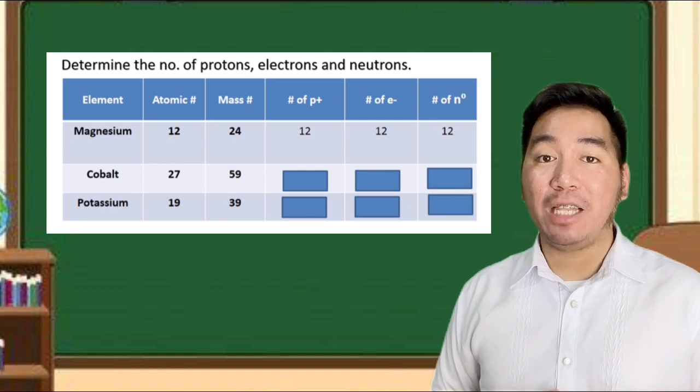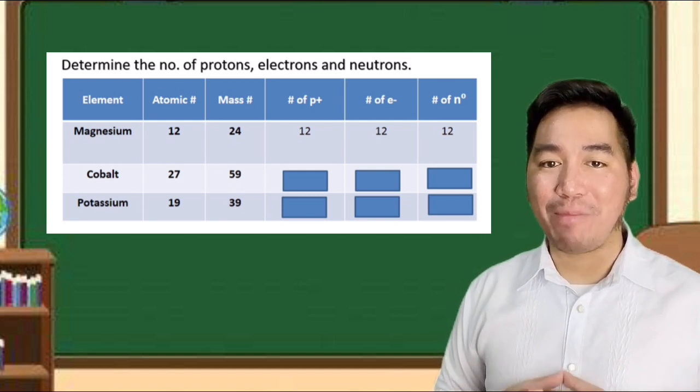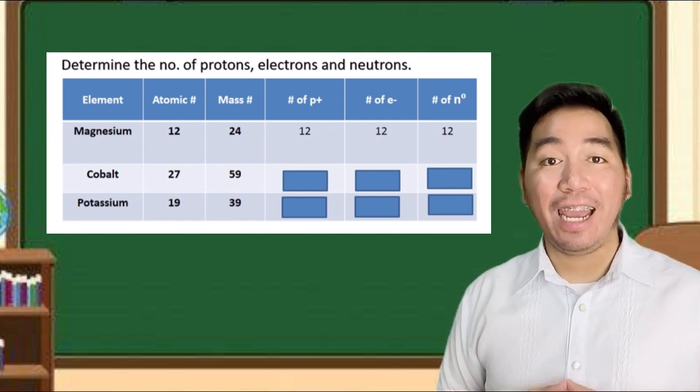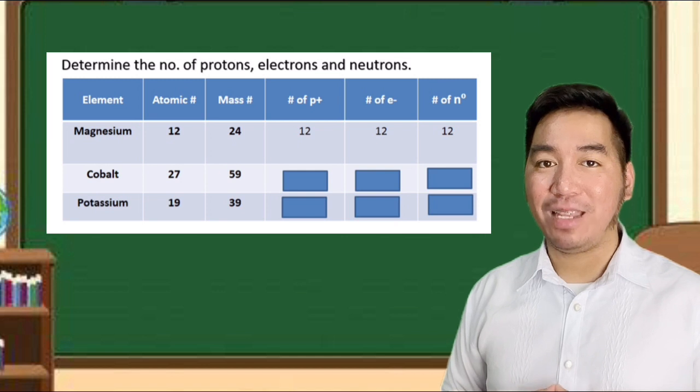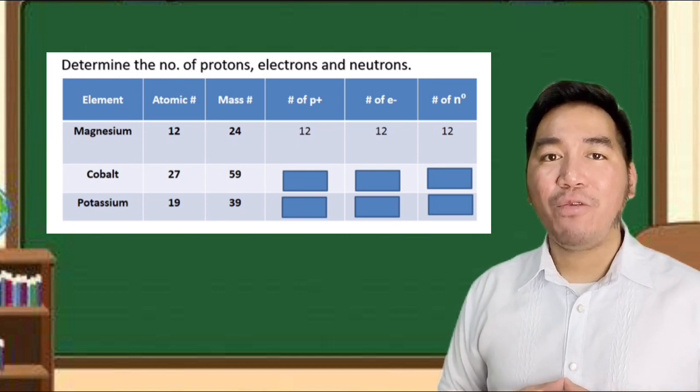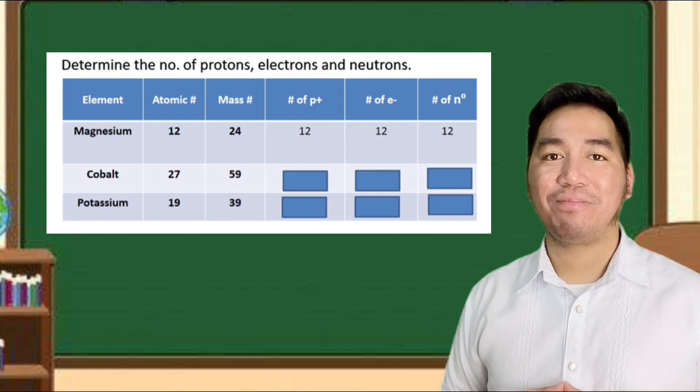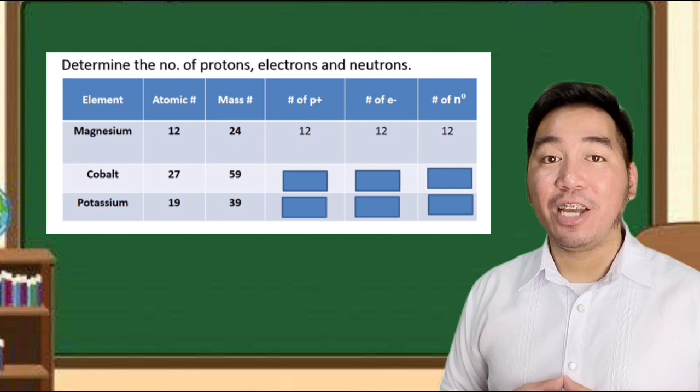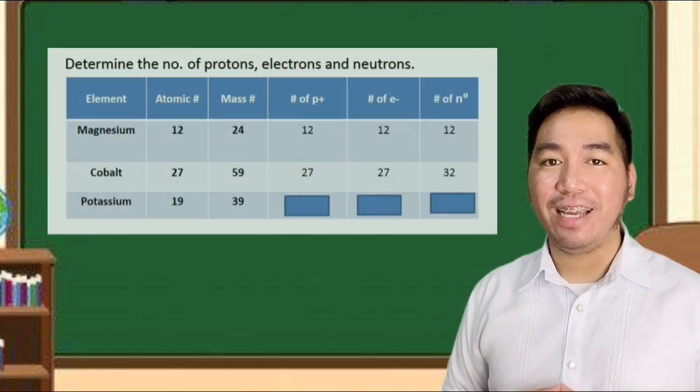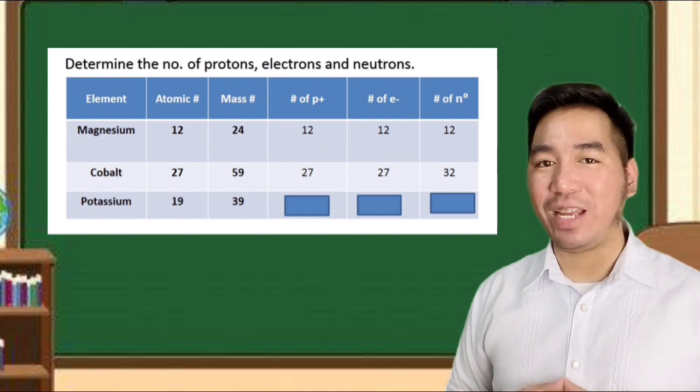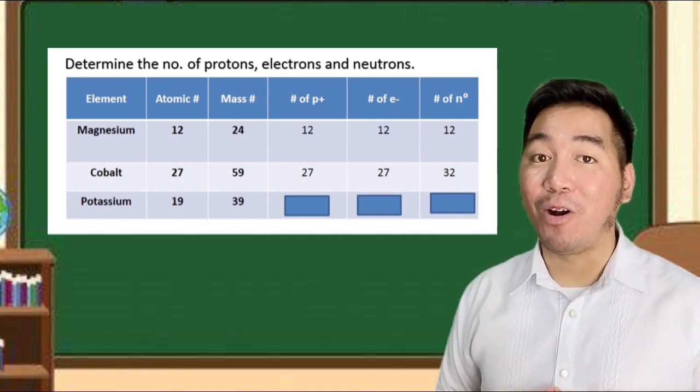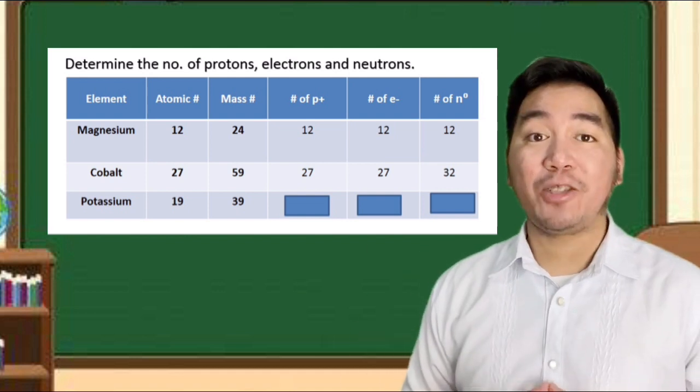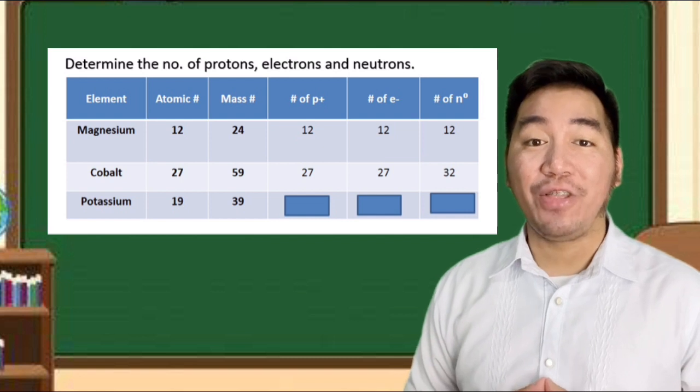The atomic number of the element cobalt is 27. And the atomic mass is 59. Determine the number of protons, electrons, and neutrons. Again, you can pause the video for you to think your answer. Now, what do you think the answer? The number of protons is 27. The number of electrons is also 27. And the number of neutrons is 32. Very good!